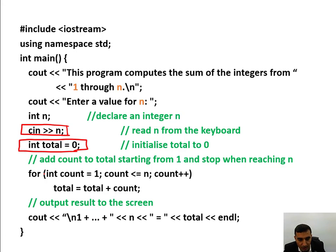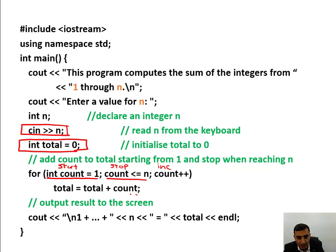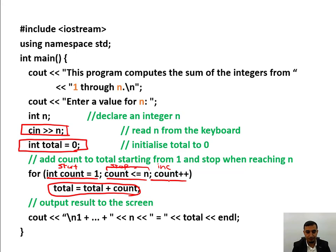This is my for loop: 'for (int count = 1; ...)'. This is my starting point, this is my stopping condition, and this is my increment. I start at counter 1; if counter is less than n, I execute the loop body — this expression must always be true. Once the body ends, I increment and apply whatever operation is given. This sums the numbers between 1 and n.